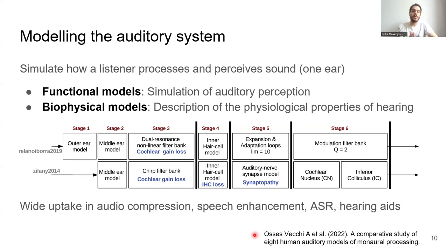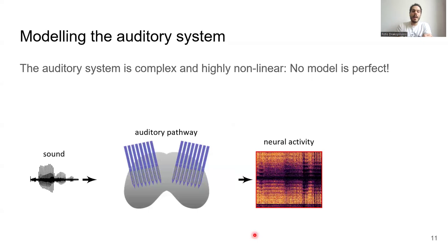Auditory models have been widely used in many different applications, where functional models have been used to design MP3 algorithms, speech enhancement, and automatic speech recognition. More biophysically inspired models of hearing-impaired auditory processing have been used in hearing aid development. All these existing auditory models have been hand-designed to produce specific biophysical or perceptual phenomena and also generic effects of hearing loss, which do not necessarily match all the nonlinear transformations of sound that happen within the auditory pathway.